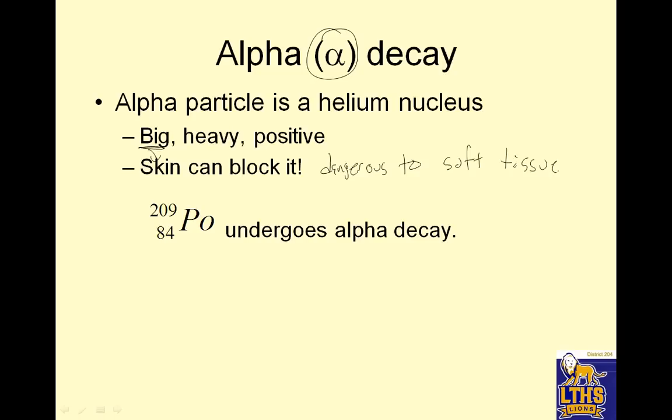Polonium-209 undergoes alpha decay. So that's Po-209-84 undergoes alpha. Alpha is 4 over 2, and it can be an alpha particle like this, He, or alpha 4 over 2. There's a number of ways to do it. And what's the other thing? Well, 209 equals 4 plus something. Hey, that's 205. And 84 equals 2 plus something. That's 82. I go to my periodic table, and I look to see what number 82 is, and number 82 is lead.